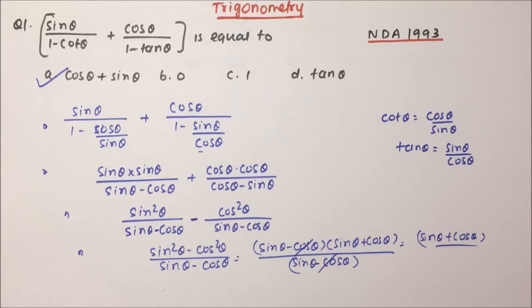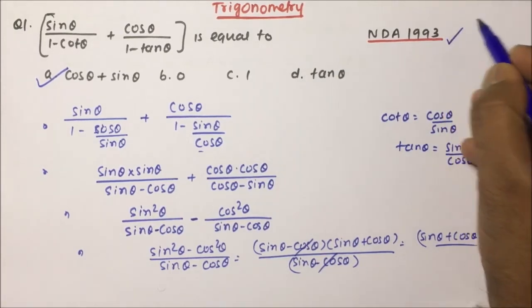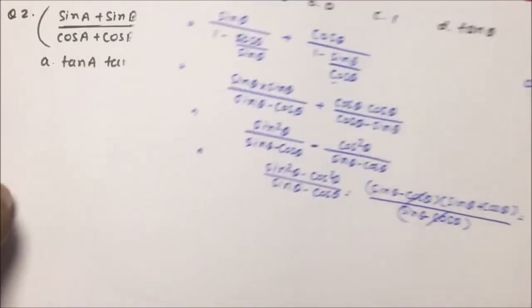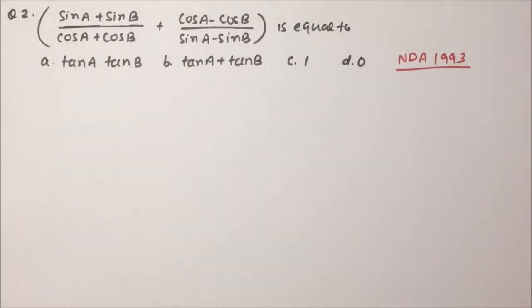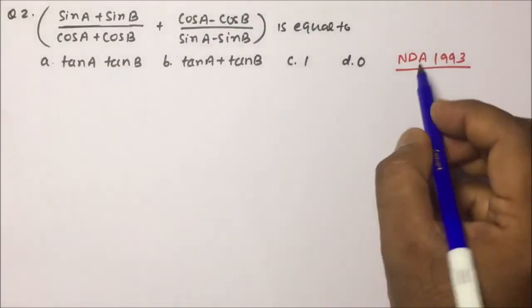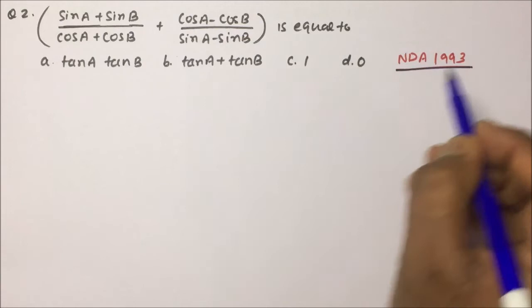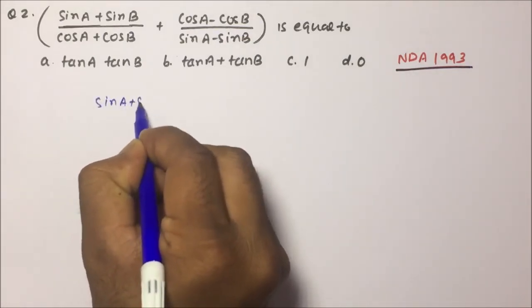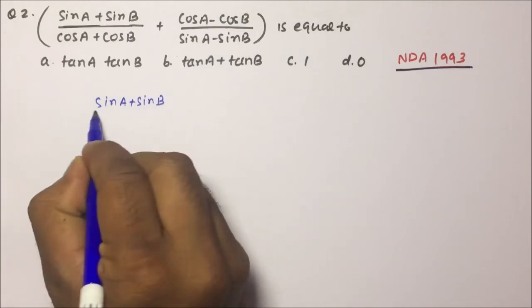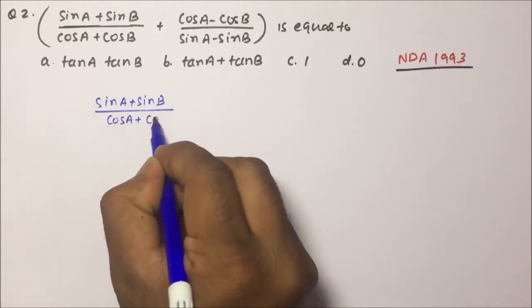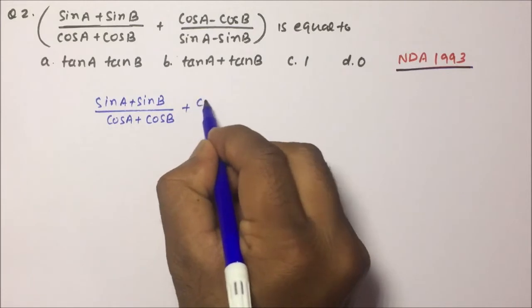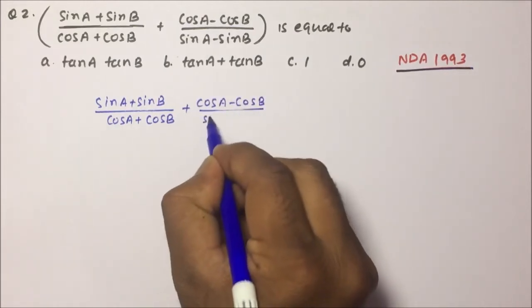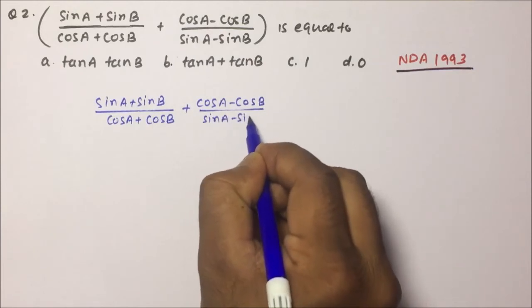Now moving towards question number 2. This question was asked in the NDA exam 1993. The expression is: (sin A + sin B) divided by (cos A + cos B), plus (cos A − cos B) divided by (sin A − sin B).